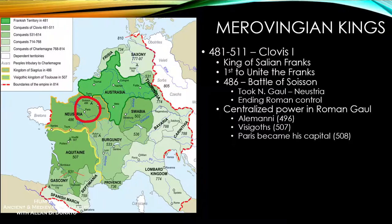He also began to centralize power in Roman Gaul, unite with other Frankish kings, and conquer other Germanic tribes like the Alemanni around 496 — a region later known as Swabia — and the Visigoths in Aquitaine by 507. He was crowned king over all these groups by 496, and Paris became his capital by 508.